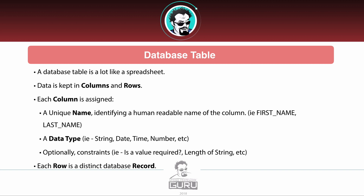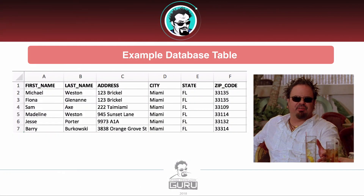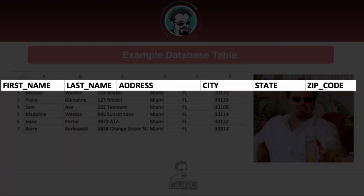When we take a row of the database, that row becomes a distinct database record. So if we have first name, last name, and an address, that becomes what's known as a database record. In my example database table — using characters from Burn Notice — the top row has the column names: first name, last name, address, city, state, and zip. Those are all database column names.